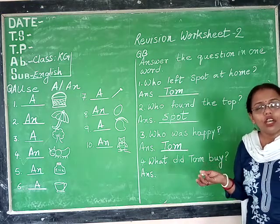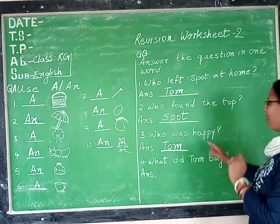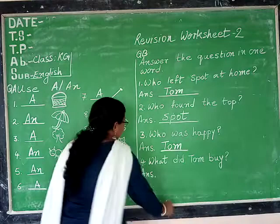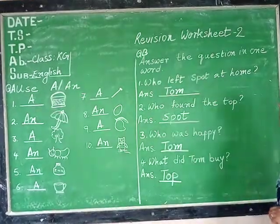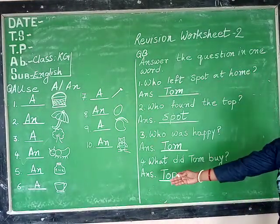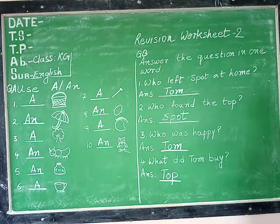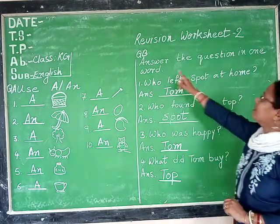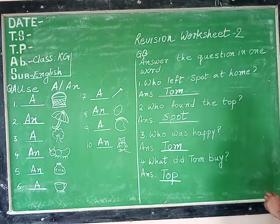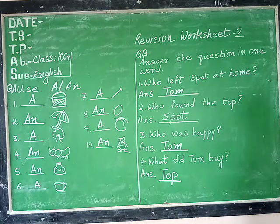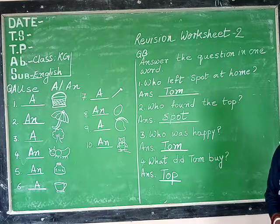What did Tom buy? So what did Tom buy? Let us think. So to summarize: who left Sport at home — Tom; who found the dog — Sport; who was happy — Tom. Let us write the answers down to the point, one word answers.